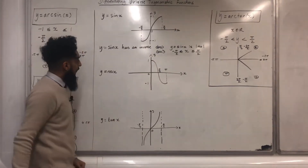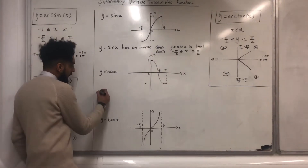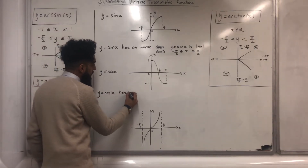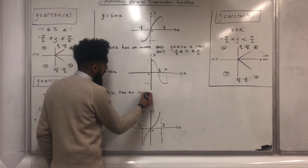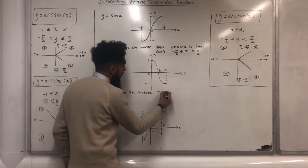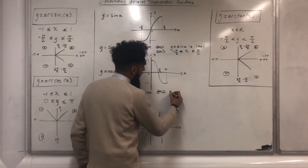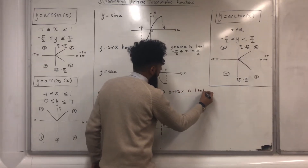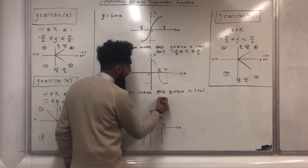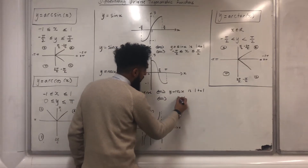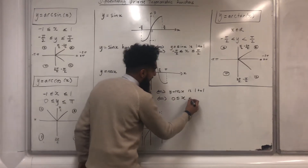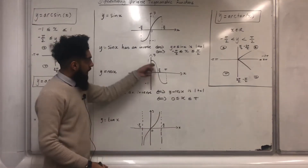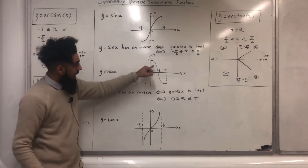Let's move on to y equals cos x. Now y equals cos x has an inverse if and only if y equals cos x is one to one, if and only if x is more than or equal to zero but less than or equal to pi. With this restriction after sketching the graph we can see that the graph is one to one.